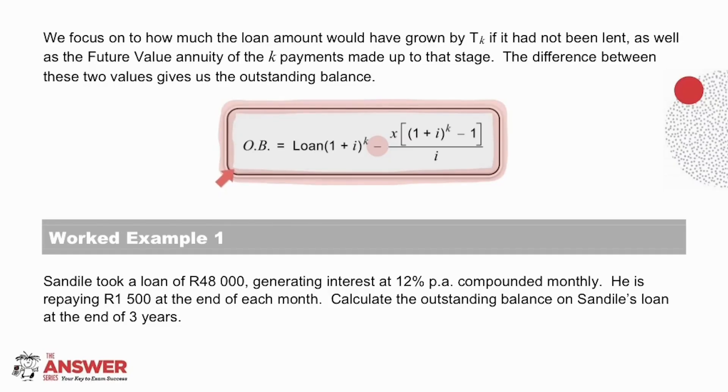The difference between these two values leads to this formula. This is one of the methods used to calculate the Outstanding Balance on a loan. So using an interest rate of i, if we take the loan amount and compound it forward k times, this first part here is the amount the loan would have grown to.